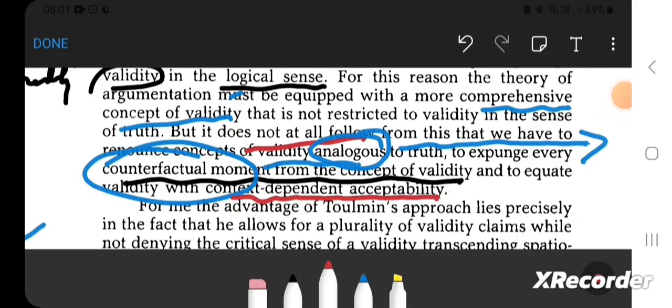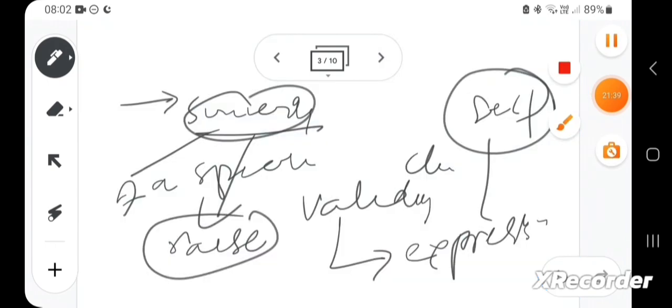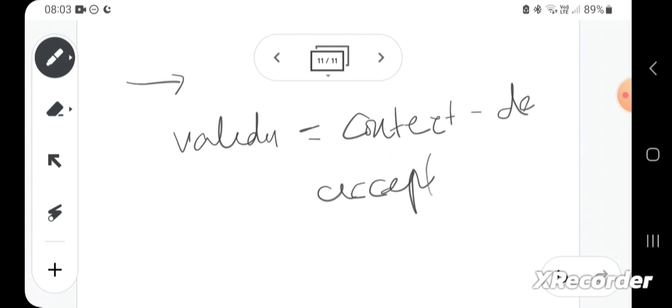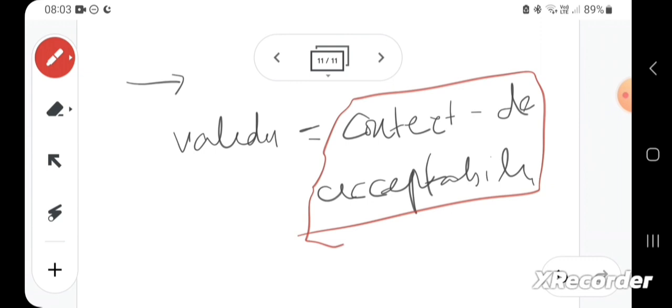Okay, let's go back. So it does not follow from this that we have to renounce concept of validity analogous to truth, to expend every counterfactual moment from the concept of validity and to equate validity with context-dependent acceptability. But when we reduce validity to context-dependent acceptability, what we are doing is we are robbing validity claims of the counterfactual moment.